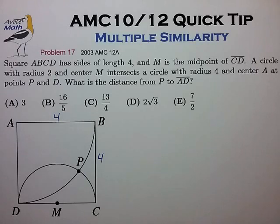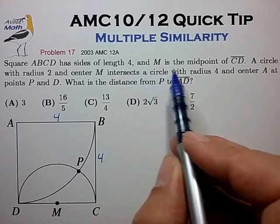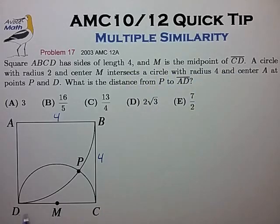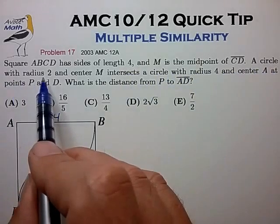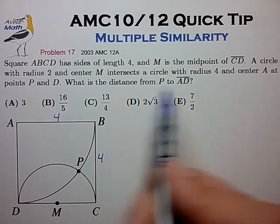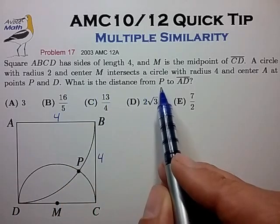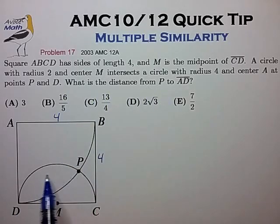So let's look at our example problem. Square ABCD has side length 4, and M is the midpoint of segment CD. A circle with radius 2 and center M intersects a circle with radius 4 and center A at points P and D. What is the distance from point P to side length AD?